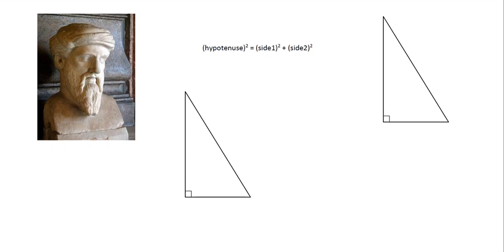We're going to look today at the Theorem of Pythagoras. Pythagoras is this guy over here who lived in ancient Greece in about the 6th century BC, and he did a lot of different mathematics, came up with quite a lot of interesting mathematical ideas, but the one that he's most famous for is a fact about right-angled triangles, which has become known as the Theorem of Pythagoras.